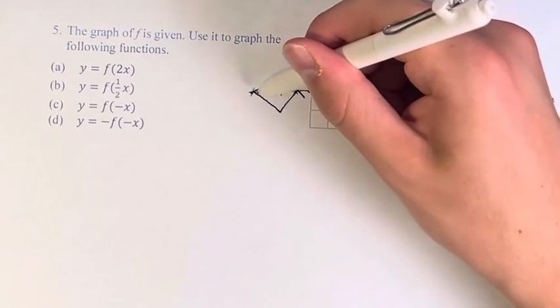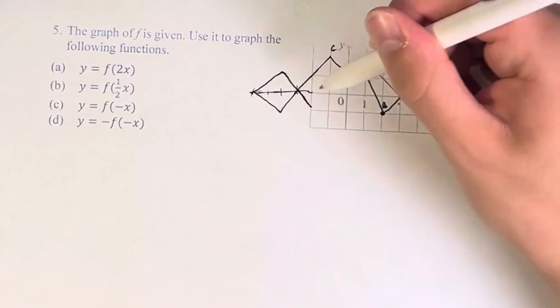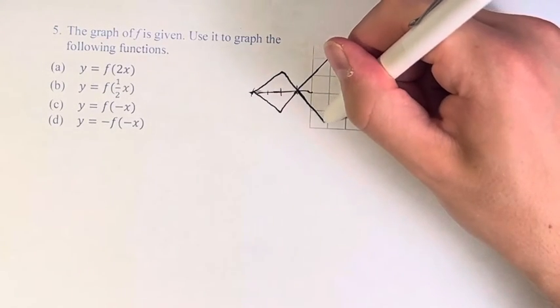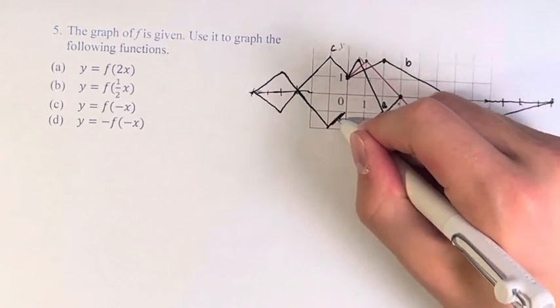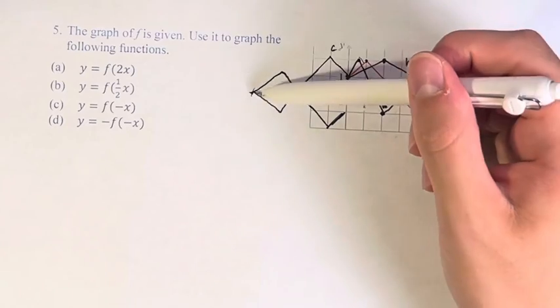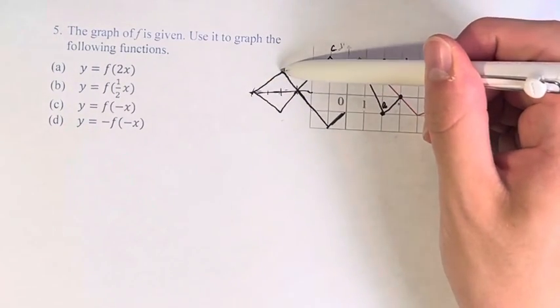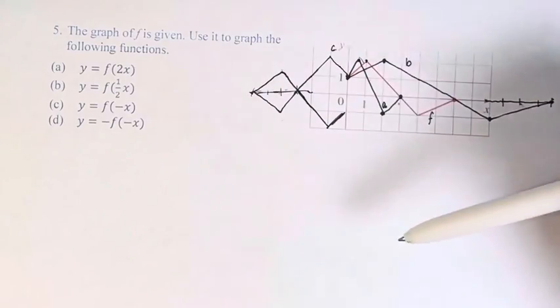Something like this, right? Where instead of going to the left 2 and down 1, we go to the left 2 and up 1, right? And so on.